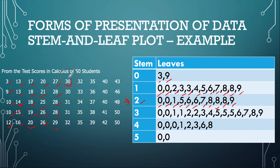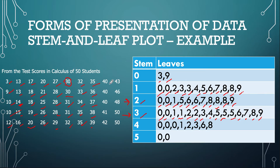We then enter the domain of 30, so the stem changes to 3 with leaves 0, 1, 1, 2 giving 30, 31, 31, 32, and leaves 2, 3, 4, 5, 5 continuing the row. Then leaves 3, 6, 7, 8, 9 give 36, 37, 38, 39. Moving to stem 4: leaves 0, 0, 0, 1, 2 give three 40s, 41, 42, and then 43, 46, 48. Finally, we have two 50s — the highest scores — represented as stem 5 with leaves 0, 0.